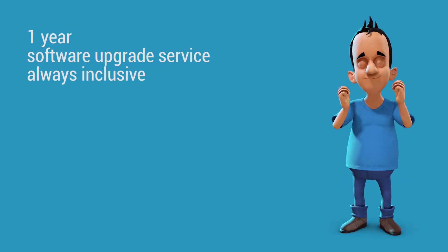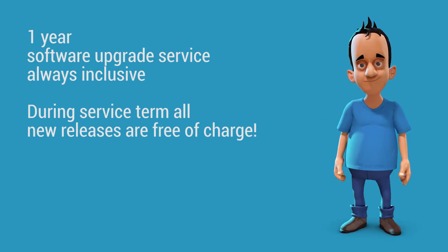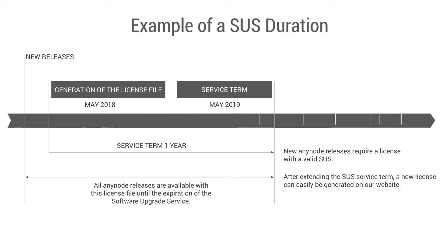Each newly purchased Anynode license automatically includes a one-year software upgrade service, which guarantees you access to free upgrades of Anynode. You can order additional years to renew beyond the one year directly upon purchase of the license. Any extension of the Anynode software upgrade service will be delivered with a new license, which includes a software upgrade service with an independent service term.